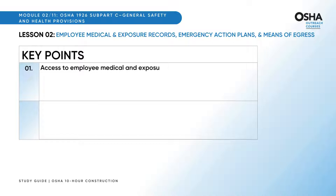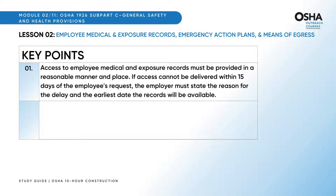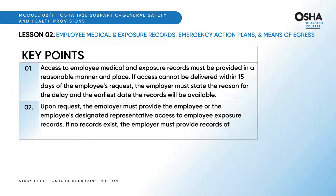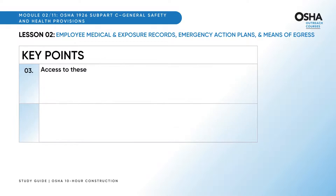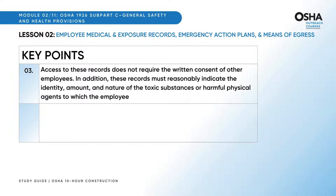Access to employee medical and exposure records must be provided in a reasonable manner and place. If access cannot be delivered within 15 days of the employee's request, the employer must state the reason for the delay and the earliest date the records will be available. Upon request, the employer must provide the employee or the employee's designated representative access to employee exposure records. If no records exist, the employer must provide records of other employees with job duties similar to those of the employee. These records must reasonably indicate the identity, amount, and nature of the toxic substances or harmful physical agents to which the employee has been exposed.